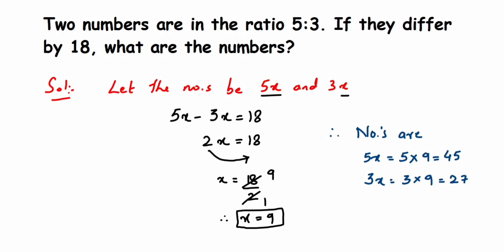You can subtract and check if the difference is 18 or not. This way you can cross-check your answers. So 45 - 27: 15 - 7 is 8, and 3 - 2 is 1, so we get 18. This is how you cross-check your answer.